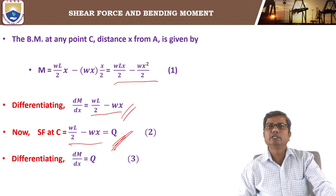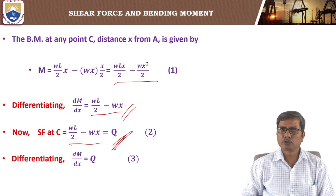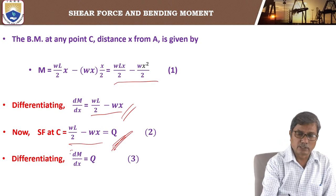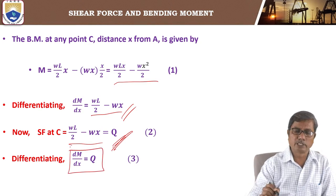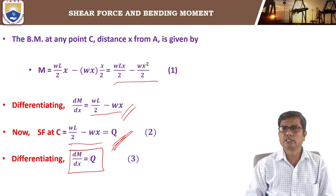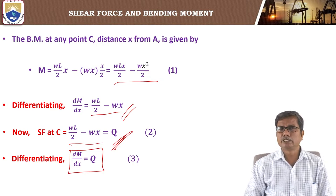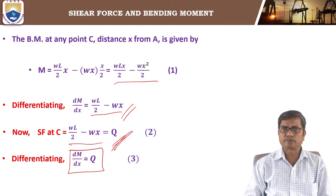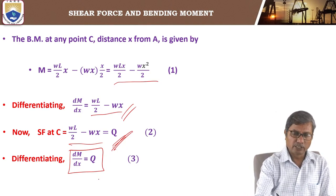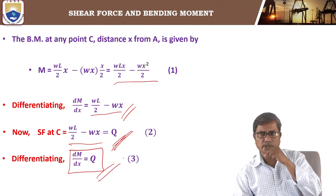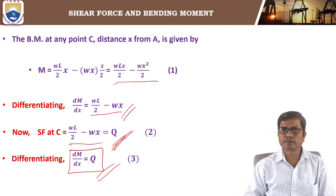So dM by dx is equal to Q. This means the first derivative of bending moment at any section is equal to the shear force at that section. This is the relation between bending moment and shear force.